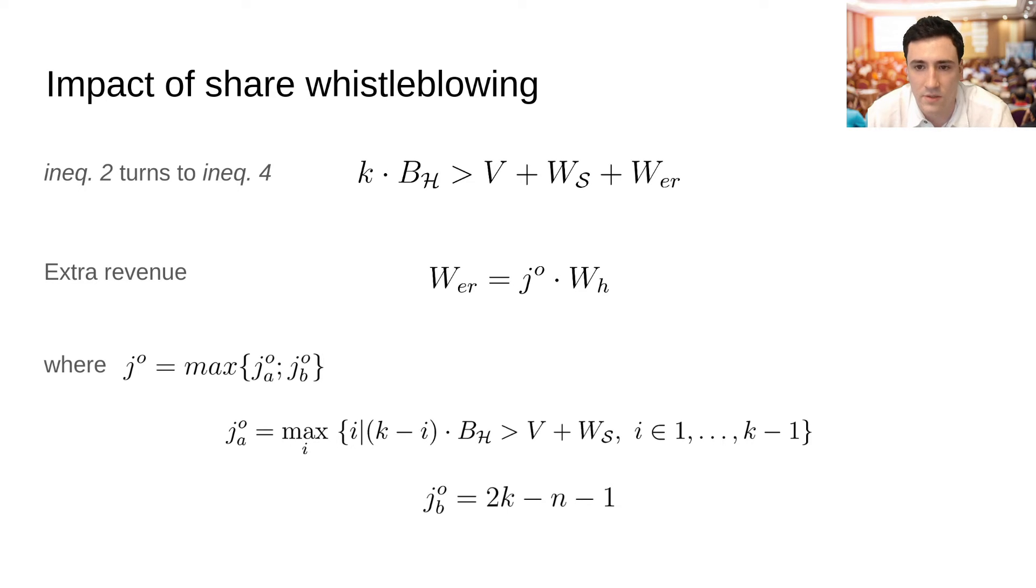There are two cases, case A, when there are multiple coalitions that are able to recover the secret, and case B, where independently from the ratio between the economic amounts, there is only one coalition holding at least K shares.